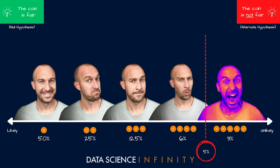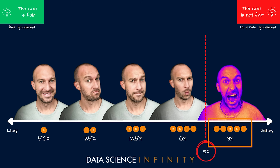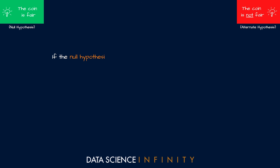When we looked at the data, the probabilities were compared against this acceptance criteria. If the probability of what we saw was higher than the acceptance criteria, we kept our belief that the null hypothesis was more likely true. When the probability was lower — when the outcome was very unlikely — we tended our belief toward the alternate hypothesis. All these values — the acceptance criteria and the probability values — are p-values.